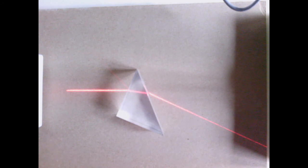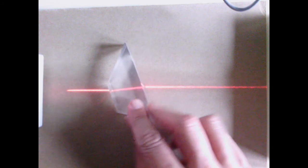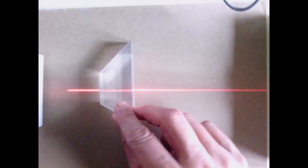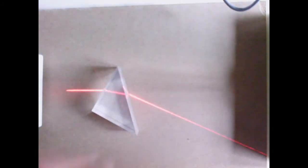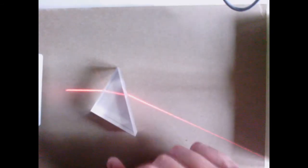If our eyes, if the front of our eyes were just like parallel pieces of glass, we wouldn't be able to focus light. We'd only be able to move it here and there.